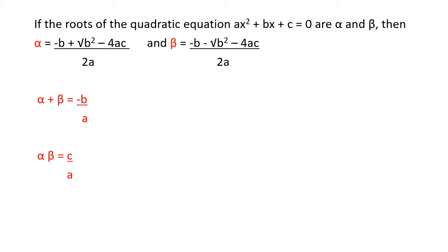Now, if the roots of the quadratic equation ax squared plus bx plus c are alpha and beta, instead of writing x I have named the roots alpha and beta. If I add both of them, alpha plus beta, the answer I get is minus b upon a. And if I multiply them, alpha times beta, the value I get is c upon a.